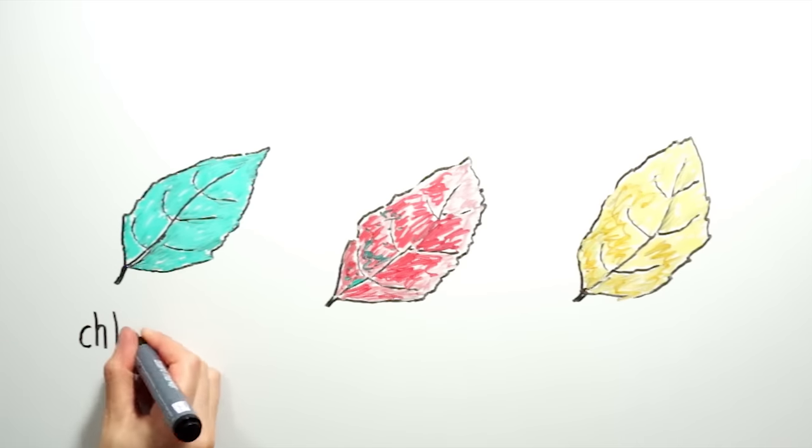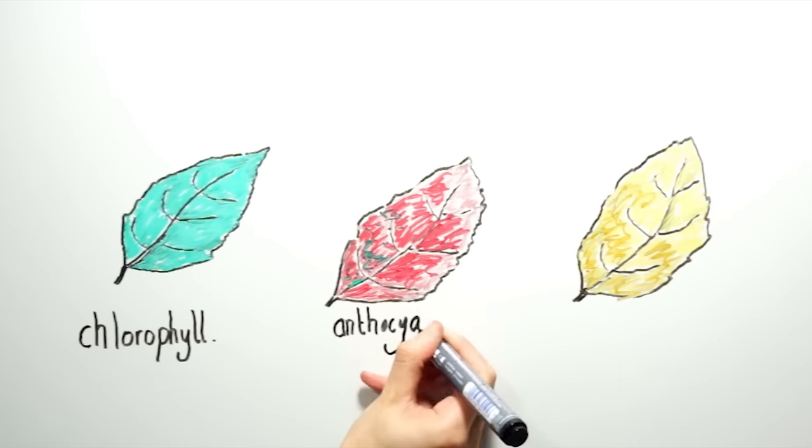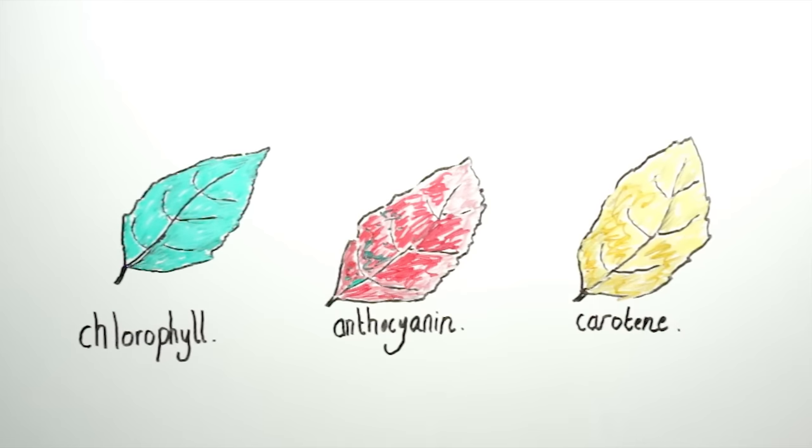The carotenes act as a supporting molecule for photosynthesis, and help to chemically stabilise the leaf, but they are a much more stable chemical than chlorophyll is, and so remain in the leaf for longer.